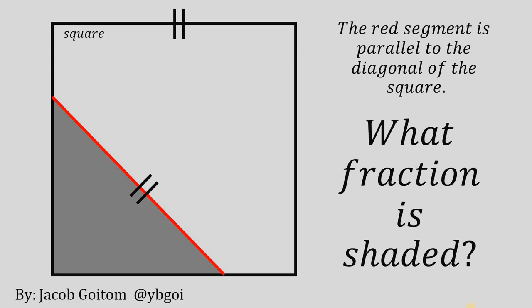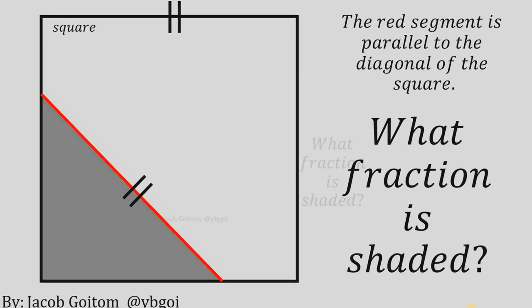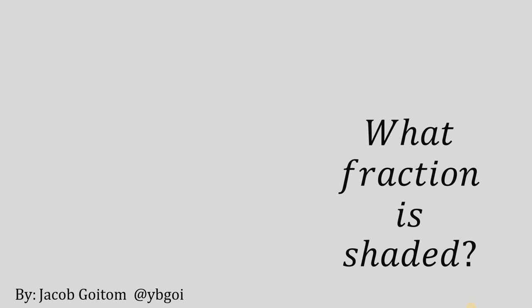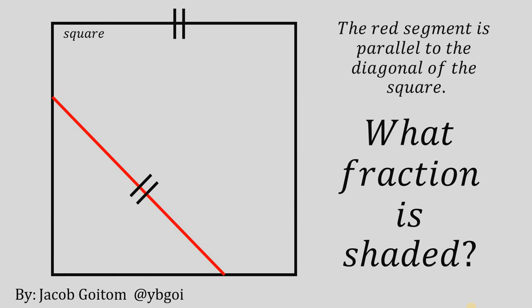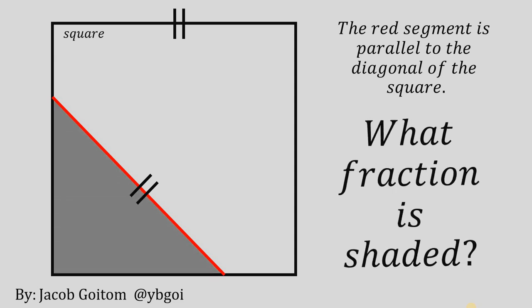Can you solve this geometry challenge? Given a square, draw a red segment with length equal to the side of the square. This red segment is parallel to one of the diagonals of the square. The question is: what fraction is shaded?